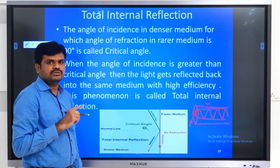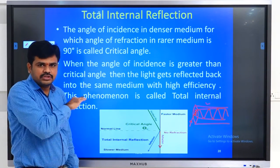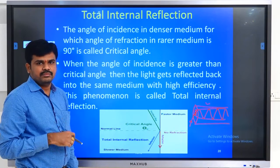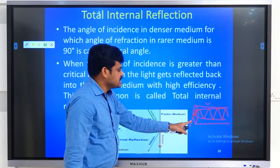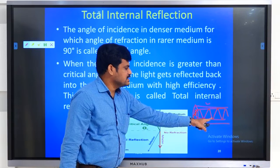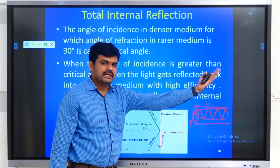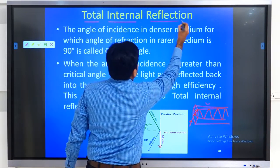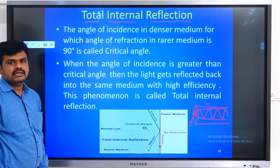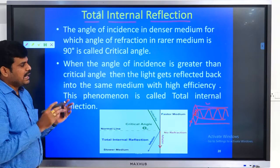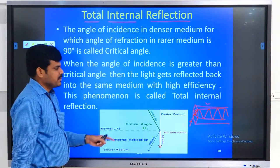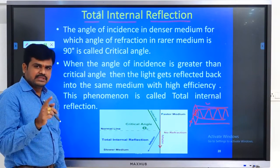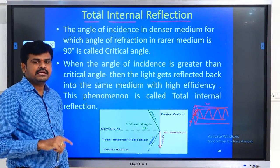There should be no refraction at all. This concept, where the light totally reflects inside the core and propagates till the end of the optical fiber cable, is called total internal reflection. In order for total internal reflection to happen inside the core of an optical fiber, there is a concept called critical angle, which we already learned in the previous session.